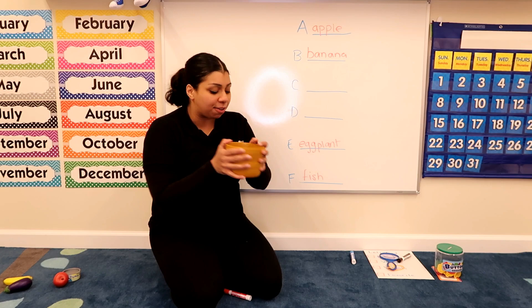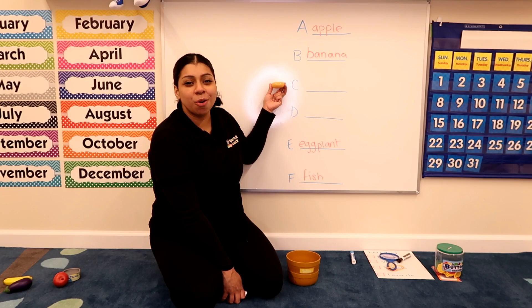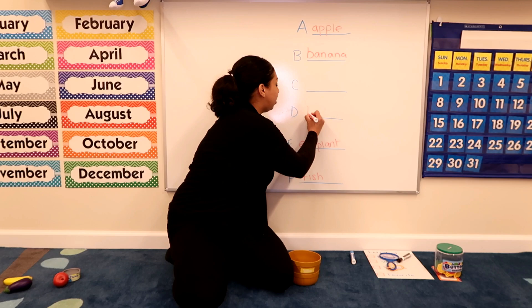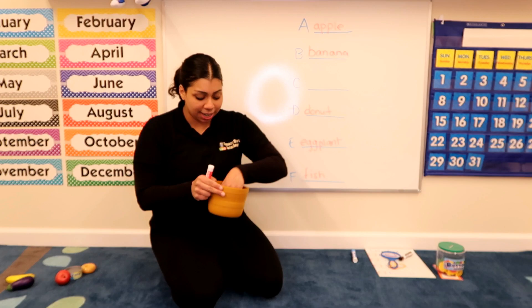Oh, two letters left: C and D. That looks like a yummy donut. C, c — not co-nut. D, d, donut. It starts with a D. D-O-N-U-T. Donut.